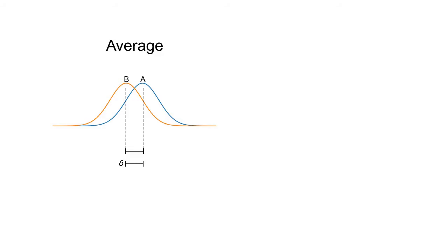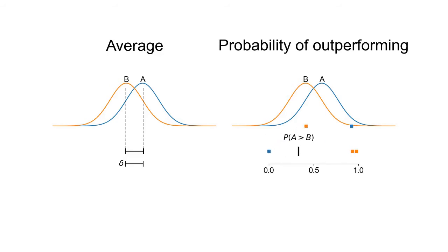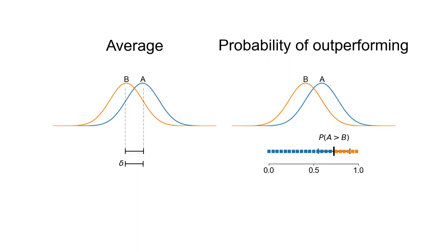Another way of comparing algorithms is the probability of outperforming — a statistical test based on the Mann-Whitney U test. To calculate this, we randomly train A and B and compare performances. Each block represents the performance of a training; the farther on the right, the better. We pick the best one, then train other pairs of A and B multiple times and compute the frequency at which A was better than B. This is the probability of A being greater than B on a given run. We then compute a confidence interval and make a statistical test.